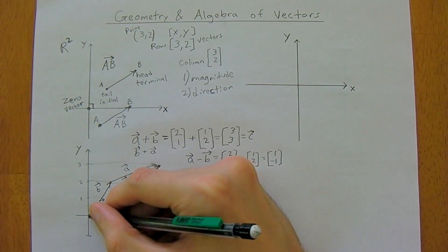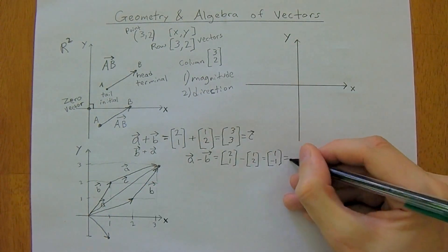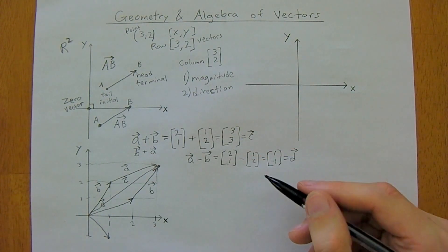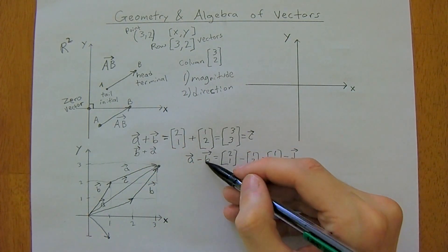So [1, -1], over 1, negative 1 would come down like this. We'll call this vector d now.